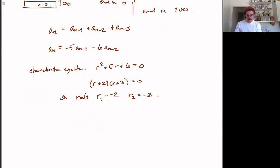So our roots are r1 equals negative 2, and r2 equals negative 3. And now we basically can read off our general solution from the roots of the characteristic equation. Namely, they must be of the form an equals some constant times characteristic root to the n, plus another constant times other characteristic root to the n. So this is the general solution for our recurrence relation.